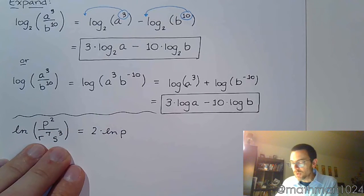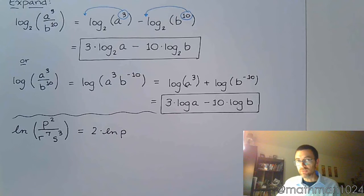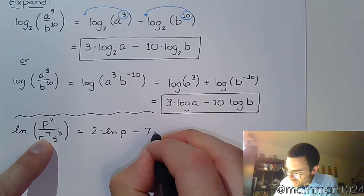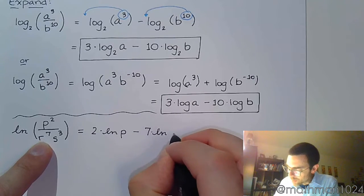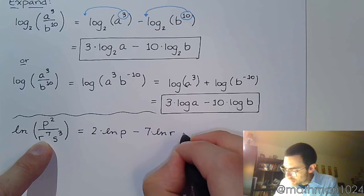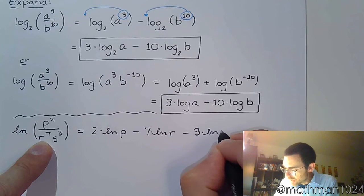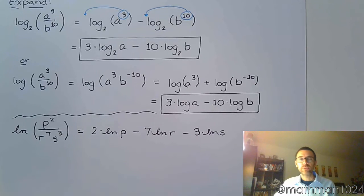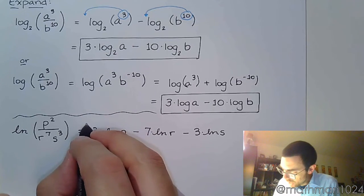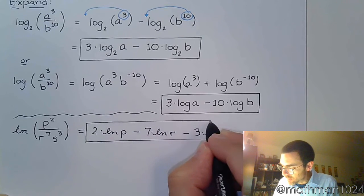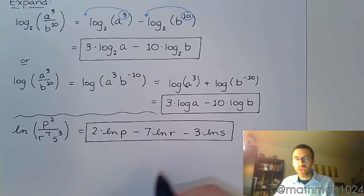And these guys, I would also want to bring the power out in front for their respective logs as I rewrite them. But since they're in the denominator, this becomes minus 7 times the natural log of r minus 3 times the natural log of s. And you have this completely expanded. And we're done. There's not anything else that we need to do for that.